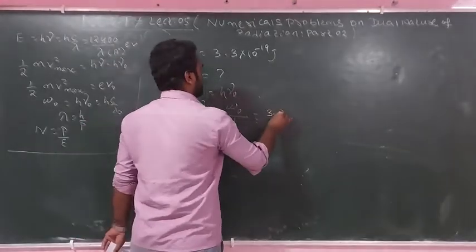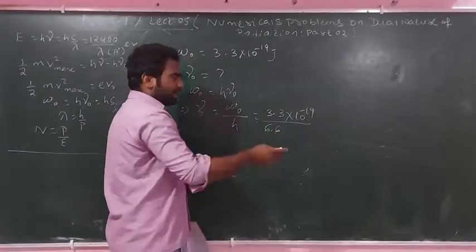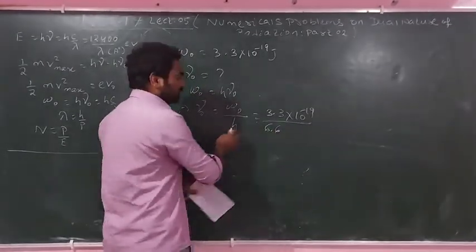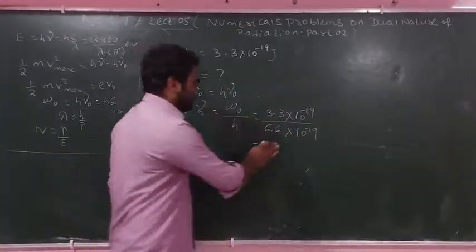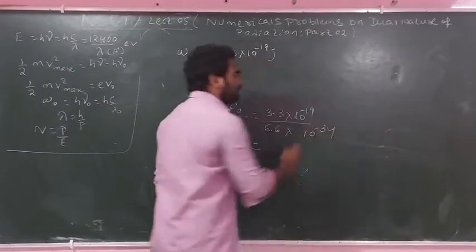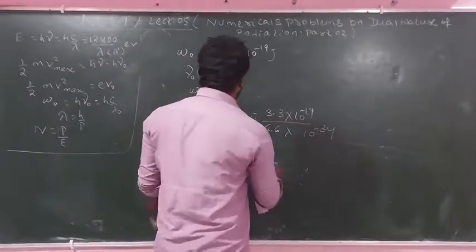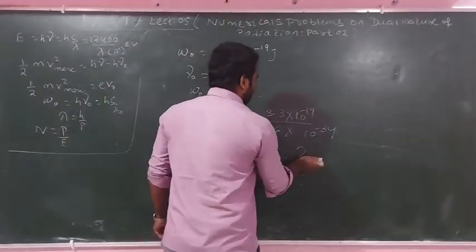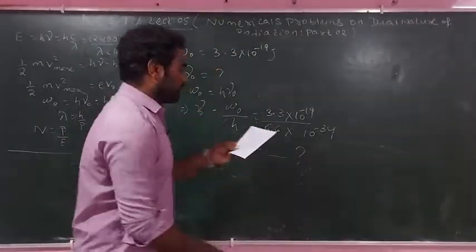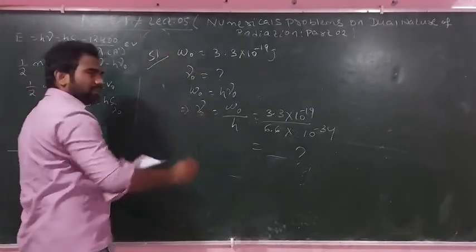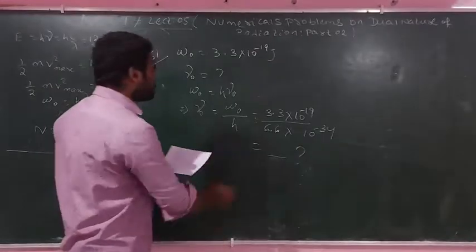W₀ is 3.3×10⁻¹⁹ joule and Planck's constant h is 6.6×10⁻³⁴. Substituting: ν₀ = 3.3×10⁻¹⁹ / 6.6×10⁻³⁴. Solve this to get the threshold frequency for question number 51. Write your answer in the comment box.